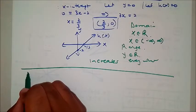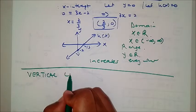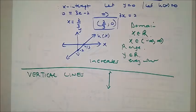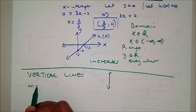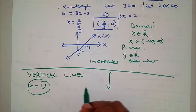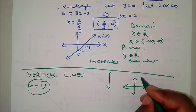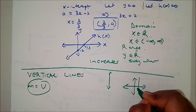Now let's look at vertical lines. Vertical lines are lines of this nature. The gradient of vertical lines is undefined — let me explain why.